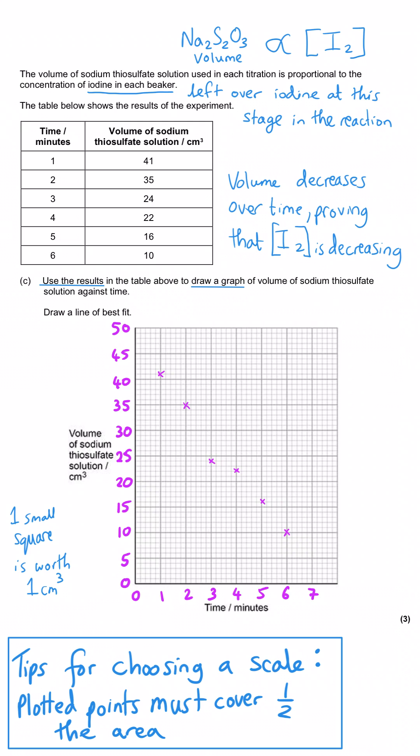When plotting graphs, I recommend two things. First, don't draw your crosses too large because you're allowed to be half a square out from where that point should be. The examiner has to judge whether you are plus or minus half a small square away. So make sure your crosses aren't too wide or too large so they can make that judgment with confidence.